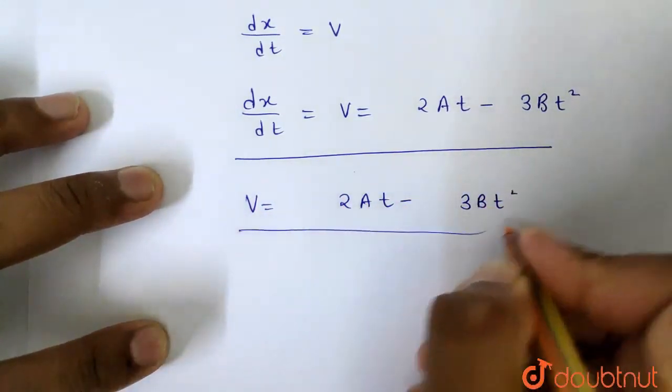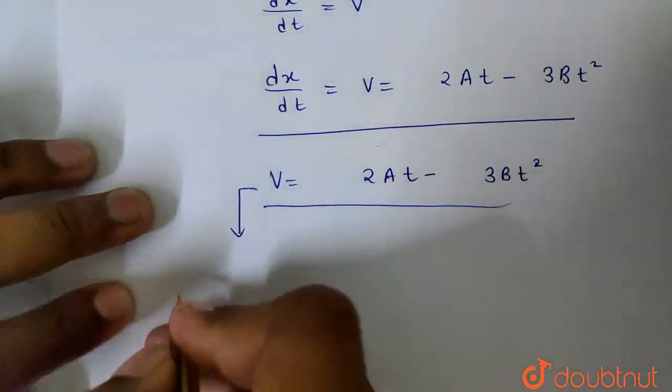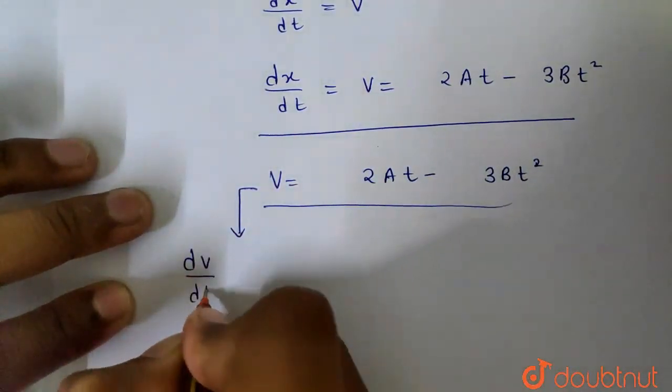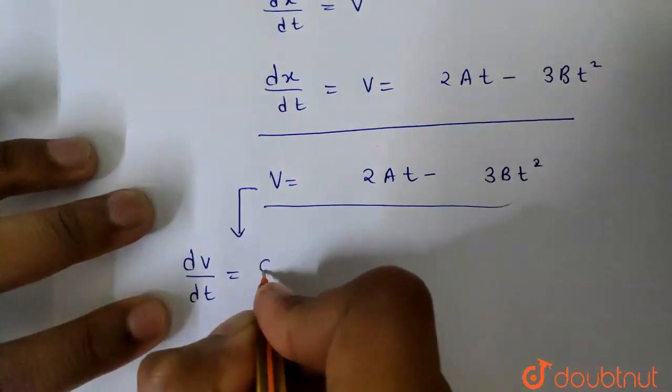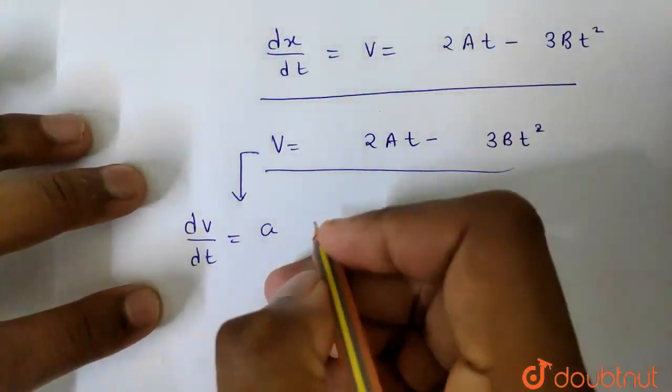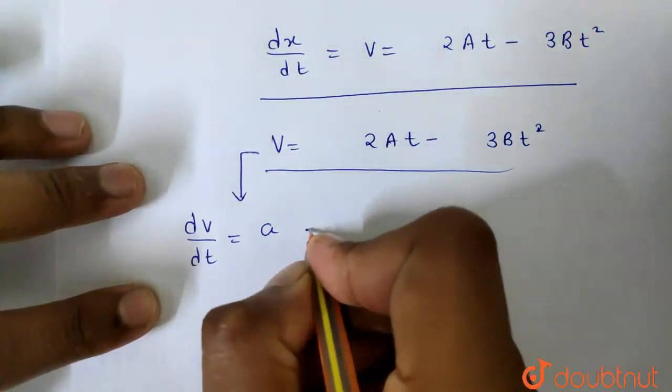Why did I do this? Look at that. If I differentiate the velocity again, dv by dt, that will be acceleration. Because the rate of change of velocity is the acceleration.